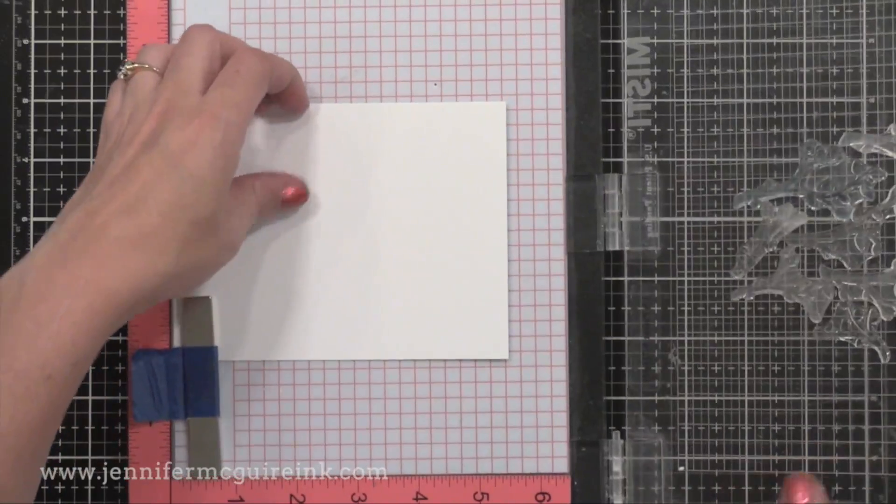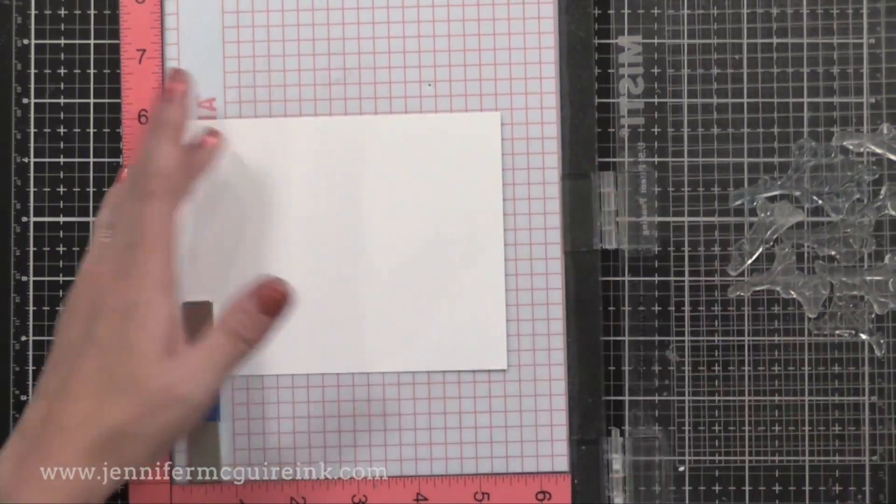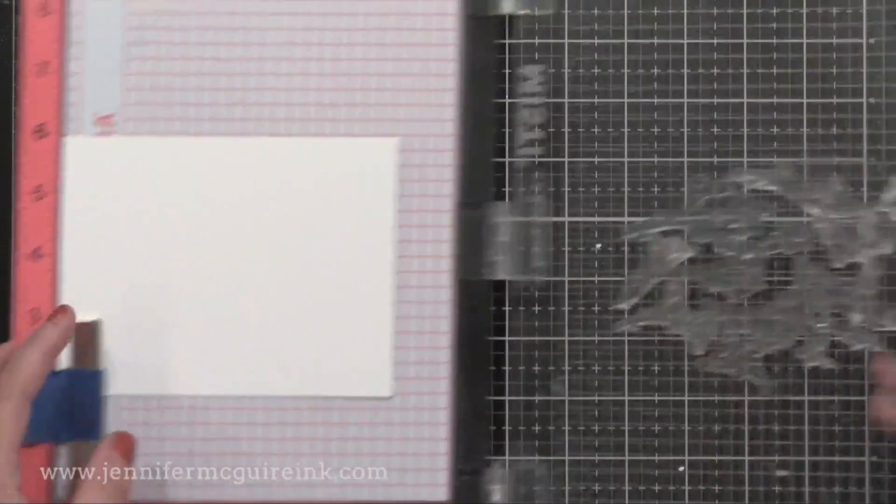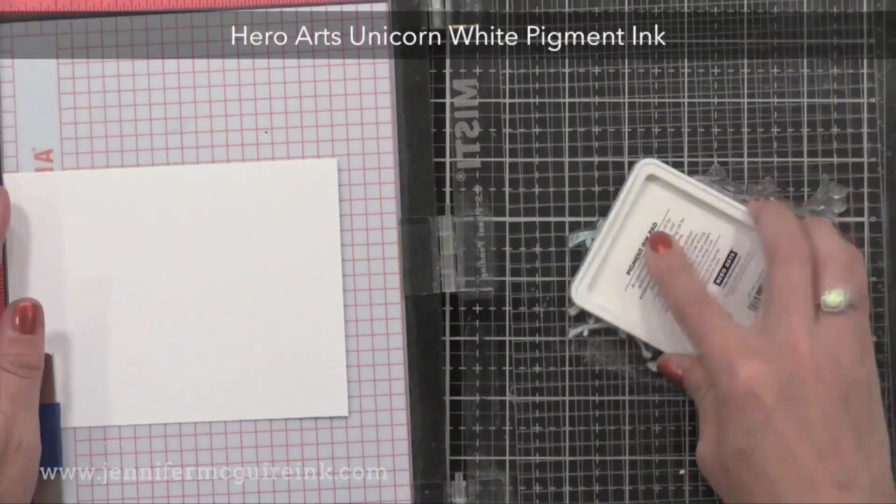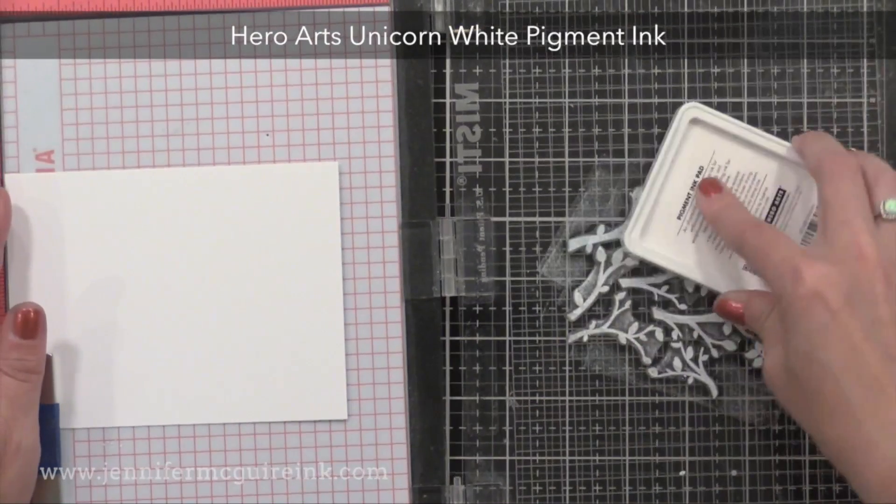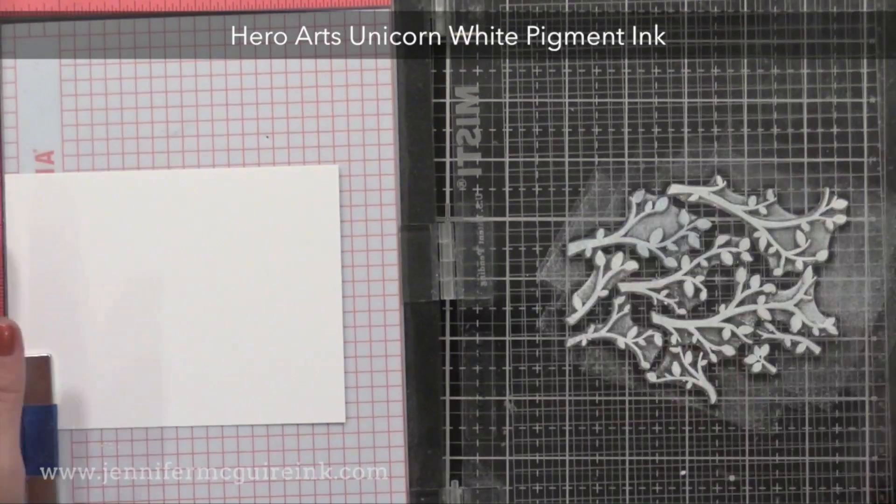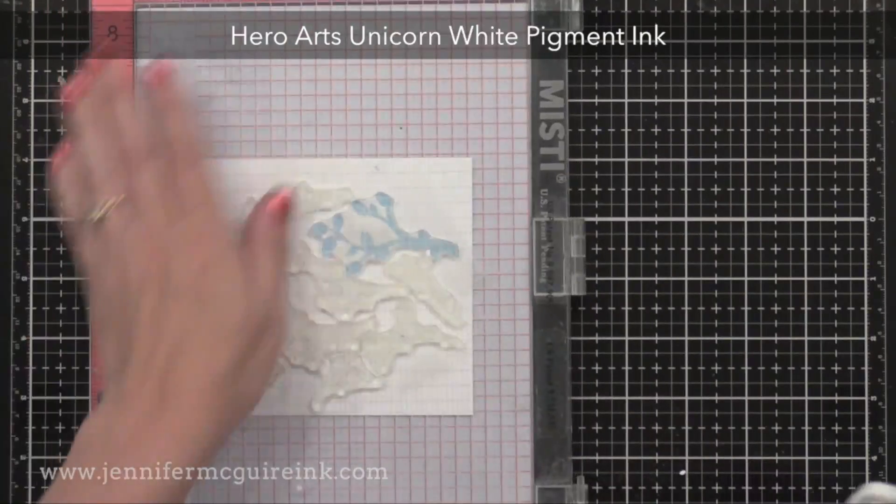Here I put a cluster of the tree branches from that May Monthly Hero Kit onto my MISTI, and I have good old-fashioned white card stock here, just plain white card stock. And I'm stamping these images with Hero Arts Unicorn White Pigment Ink.